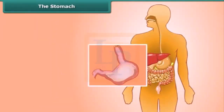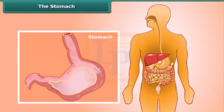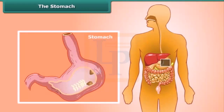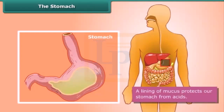The stomach is the widest part of the alimentary canal. It is a thick-walled bag with a flattened U-shape. Inside the stomach, food is churned and mixed with digestive juices including hydrochloric acid. These chemicals break down the proteins into simpler substances. A lining of mucus protects our stomach from the acids.